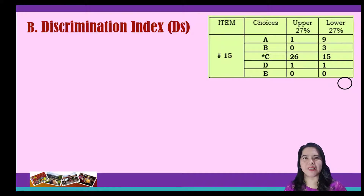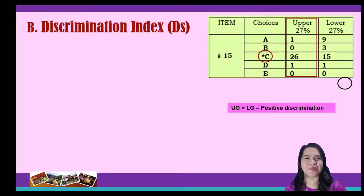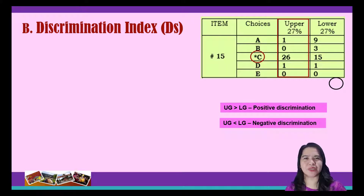Let's examine this table. The correct option is letter C. Looking at the result, we can see that the proportion of students who got an item right in the upper group is higher than the proportion of the lower group. This indicates a positive discrimination. For an item to be considered a good item, it must have a positive discrimination index. This suggests that the knowledge gained by the students enables them to select the correct answer. On the contrary, if the proportion of the students who got an item right in the lower group is greater than the students from the upper group, then we have a negative discrimination index. This means it has poor item validity and that the upper group is misled by item ambiguity. In this case, we must reject the item.